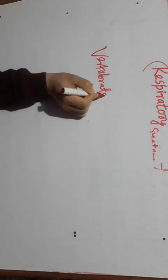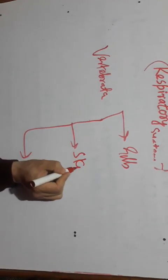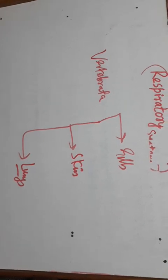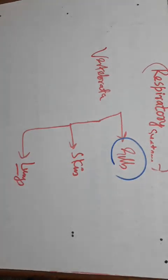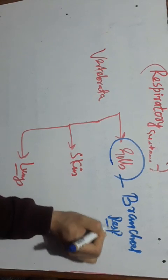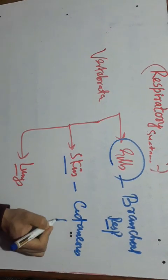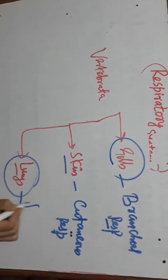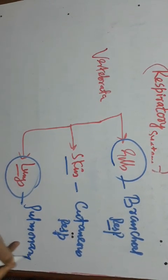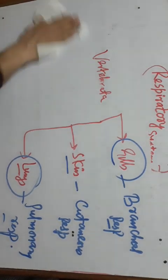In case of Vertebrata, respiration occurs by three ways: either by the help of gills, through the skin, or by the help of lungs. Respiration through gills is called branchial respiration. Respiration through the skin is called cutaneous respiration. Respiration through the lungs is called pulmonary respiration.